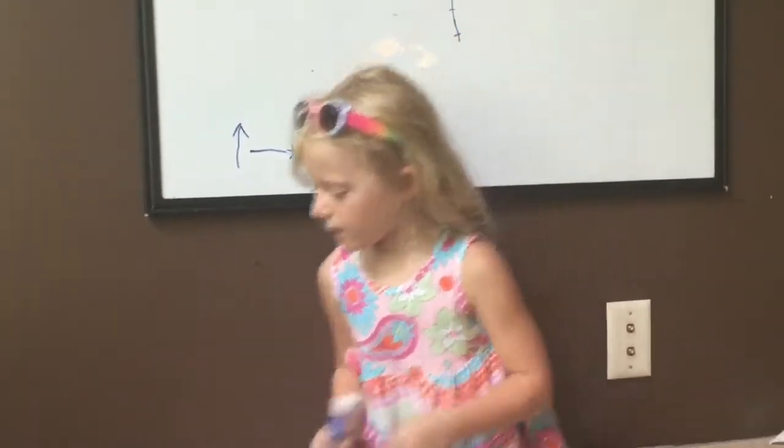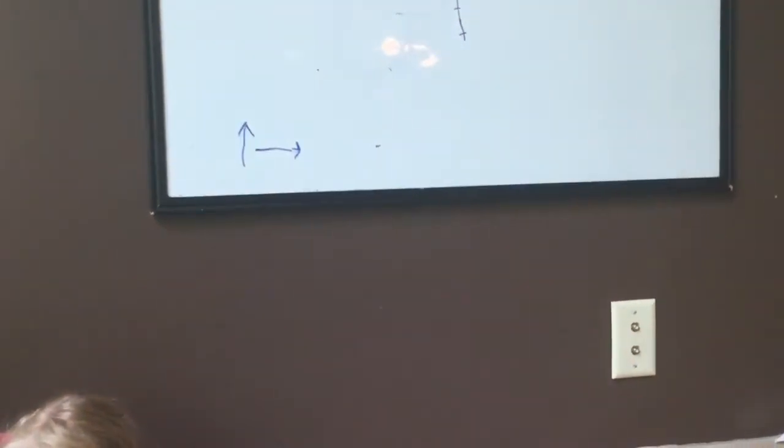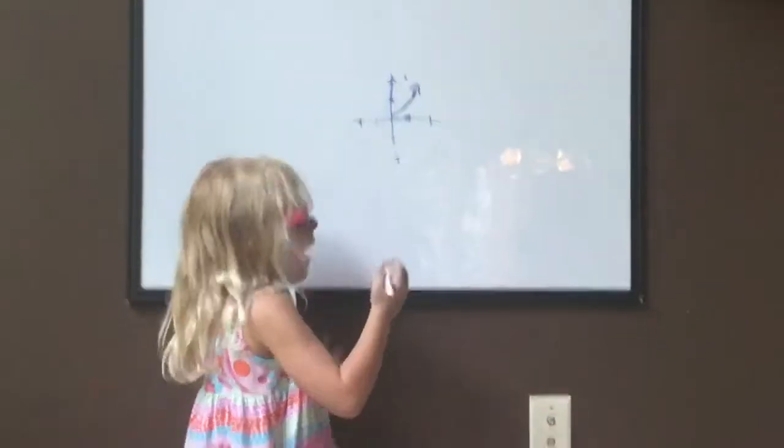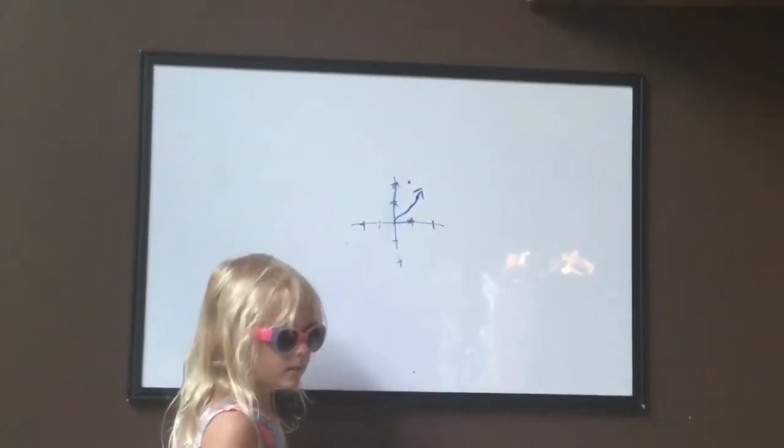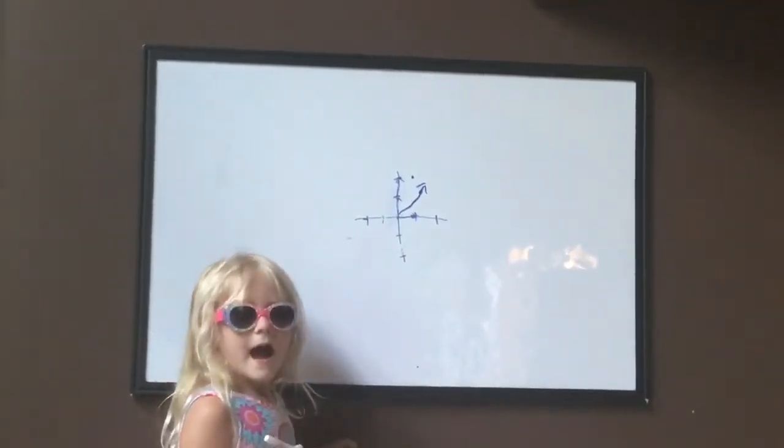So how do we think about other vectors using i-hat and j-hat? Could that vector be described as one i-hat and two j-hats? Yeah.